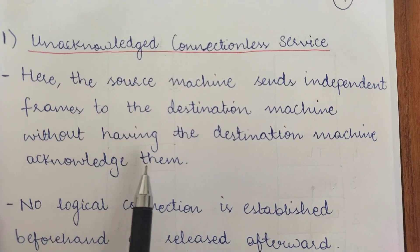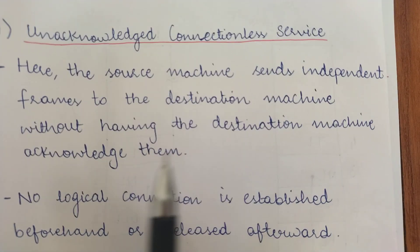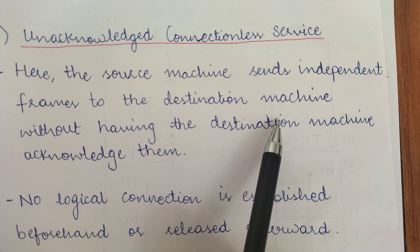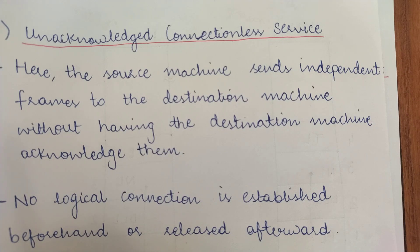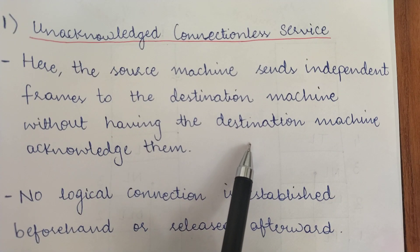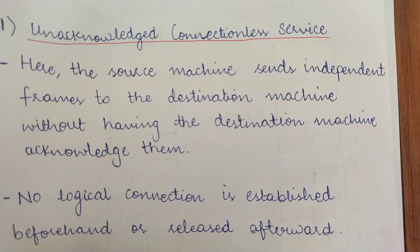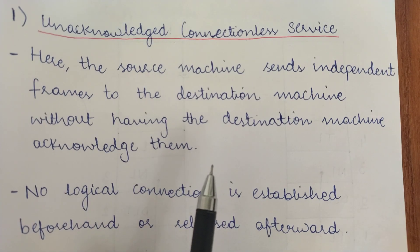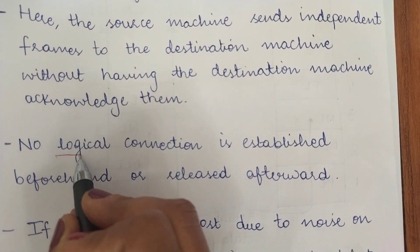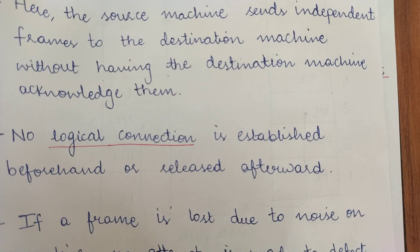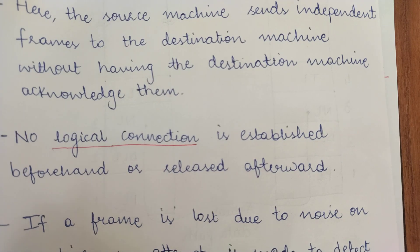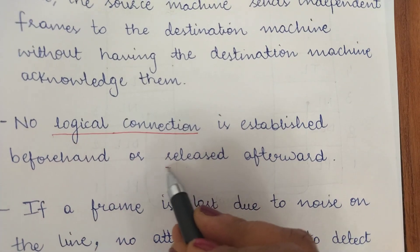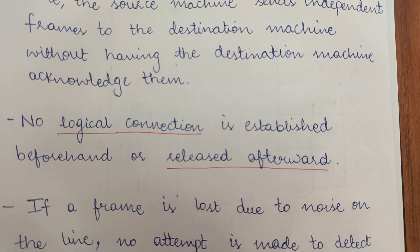Starting with the first one — the unacknowledged connectionless service. Here the source machine sends independent frames to the destination machine. Independent frames means each frame is independent to choose its own path; it does not follow the same path which previous frames have chosen. The destination machine does not acknowledge the reception of those frames — it does not tell the sender that it has received these frames. No logical connection is established beforehand, and hence it is not released afterwards, because it is not a dedicated or exclusive connection for those two machines.